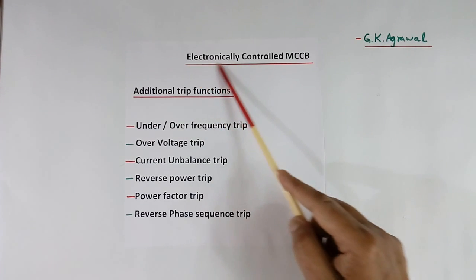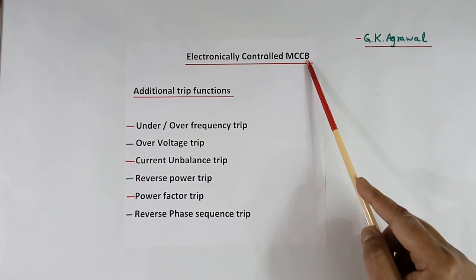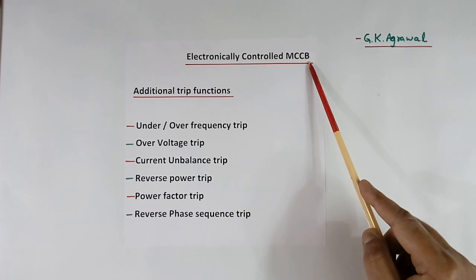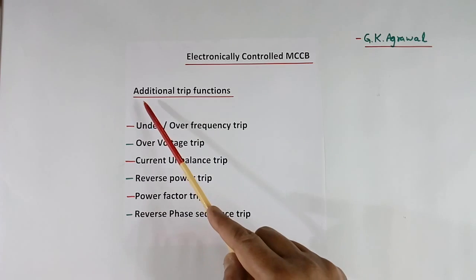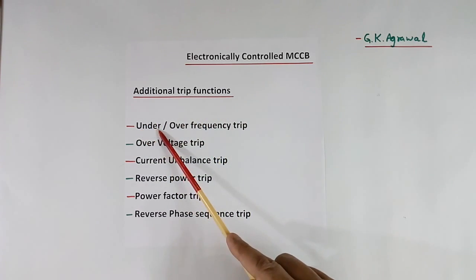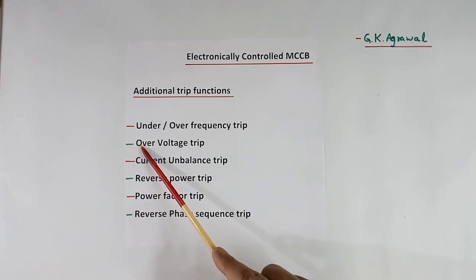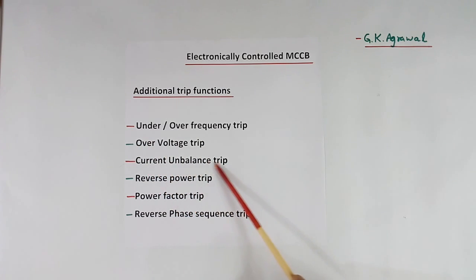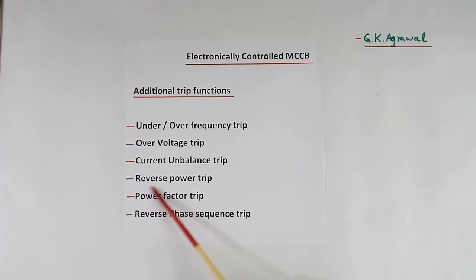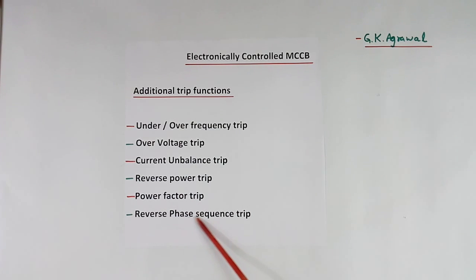Nowadays electronically controlled MCCBs are also available. In addition to the functions we have discussed, they have additional trip functions also, like under/over frequency trip, over voltage trip, current unbalance trip due to load unbalance, reverse power trip, power factor trip — if power factor comes down too much, then MCCB will trip — and reverse phase sequence trip.